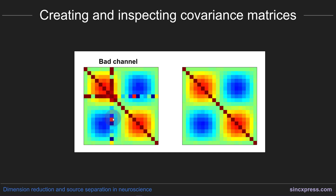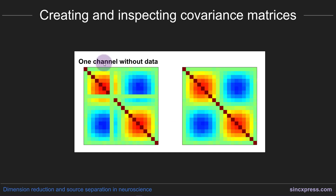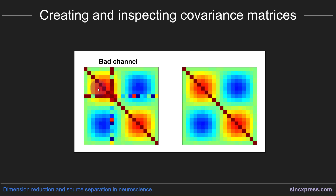In the last example, I replaced one channel with large-amplitude random noise — no meaningful signal, just large random numbers. In this case it's very obvious that something is wrong: this channel looks very different from all the others, with a very large diagonal element and unusual off-diagonal values. This was less obvious in the zeroed-out case. If I saw a covariance matrix like this, I would be immediately suspicious and start investigating that channel.